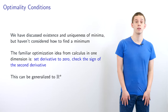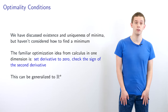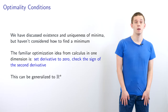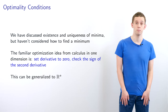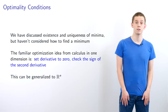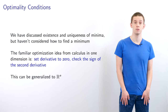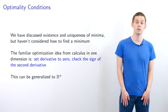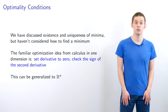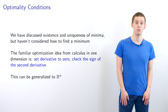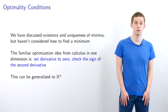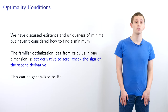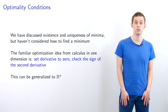So far, we've discussed the existence and uniqueness of minima, but we haven't considered how to find a minimum. The familiar optimisation idea from calculus in one dimension is to set the first derivative to zero and then check the sign of the second derivative. In this video, we're going to look at generalising this to the n-dimensional case.